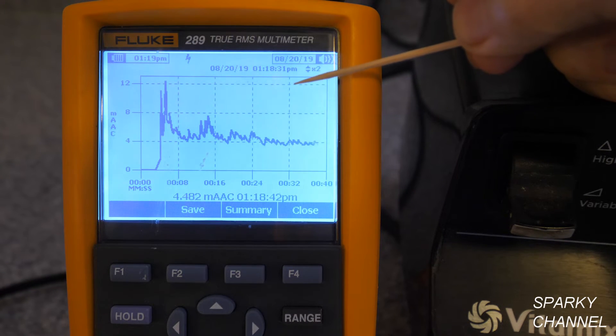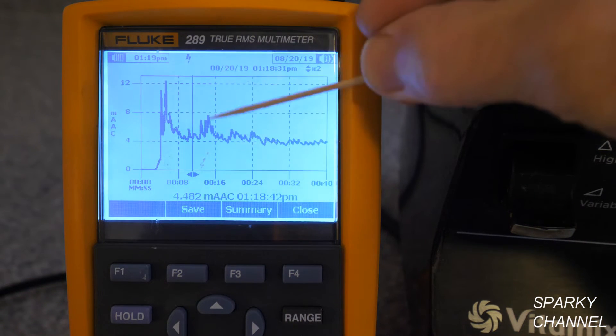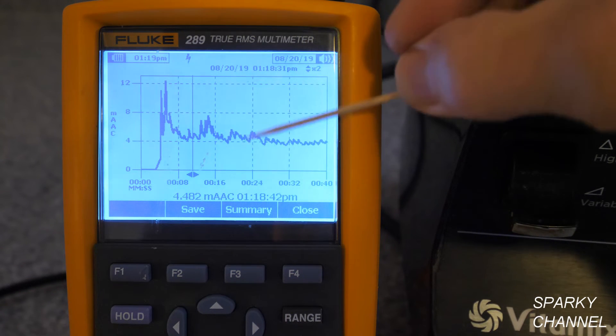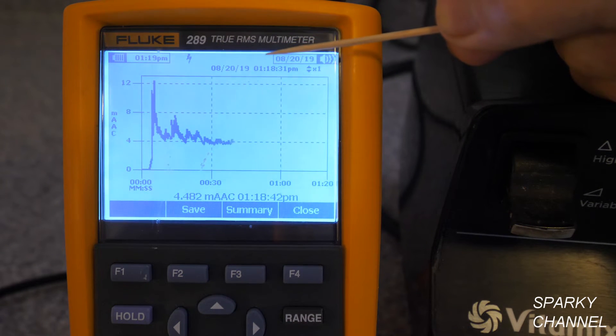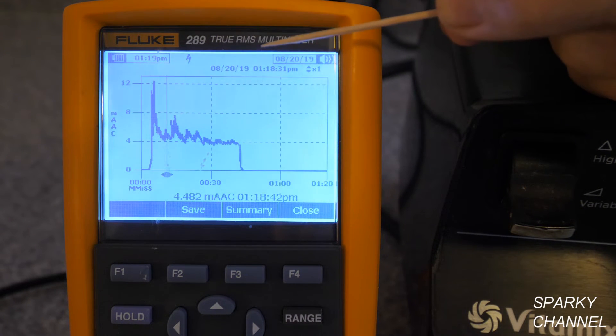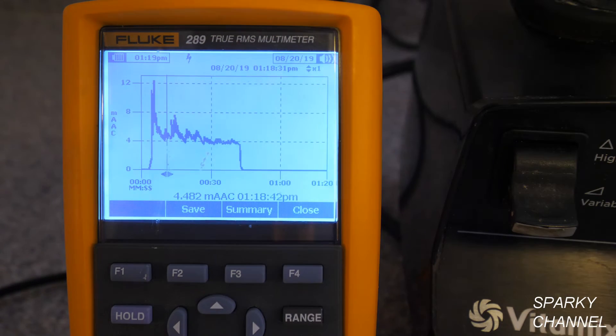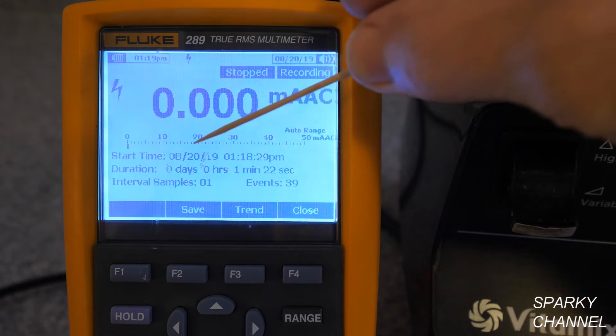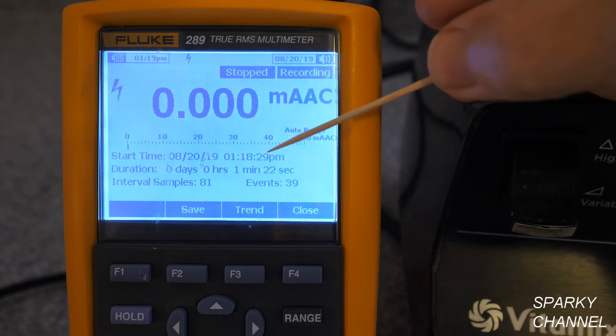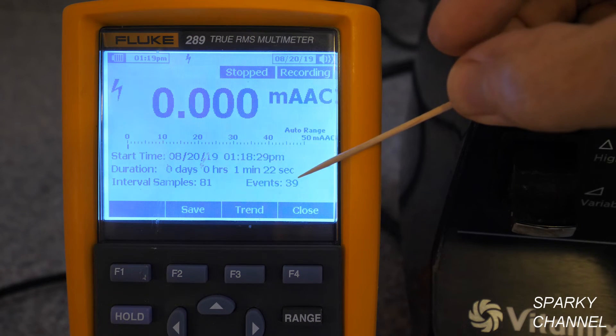So we push the down arrow. And here it is again. So you can see there's a lot of up and down. That's where I'm pushing the ice down onto the blades. Push this again. And now we're back to the original graph right here. All right, so let's look at the summary. Okay, here's the summary. The duration was 1 minute and 22 seconds. 81 samples taken. 39 events.